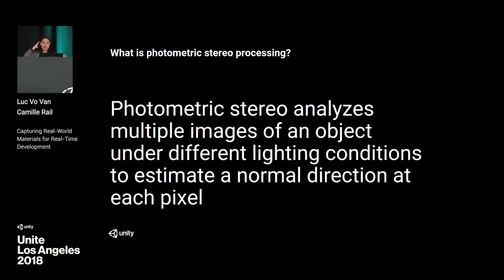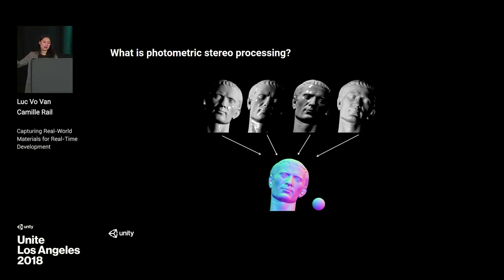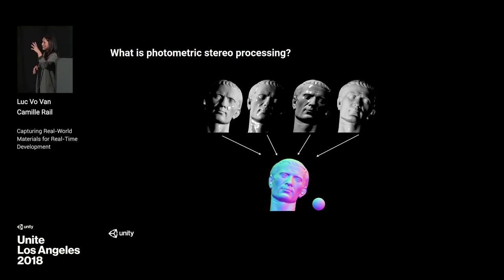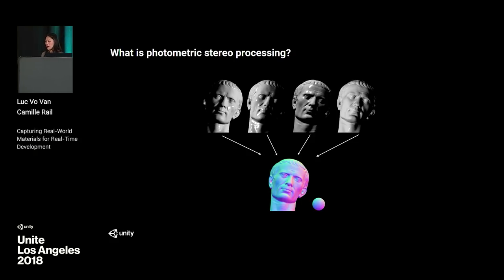So what is photometric stereo processing? Photometric stereo analyzes multiple images of an object under different lighting conditions to estimate a normal direction at each pixel. You have four images capturing the same item but with different lighting directions and angles, and together with all this information, you can generate a normal map. Our workflow will have multiple images at different lighting angles and directions to generate different maps using this method.